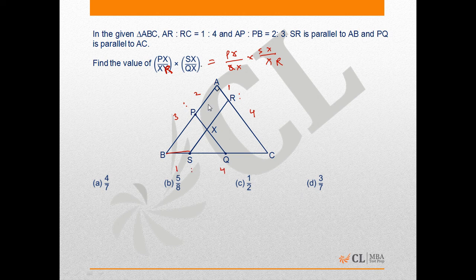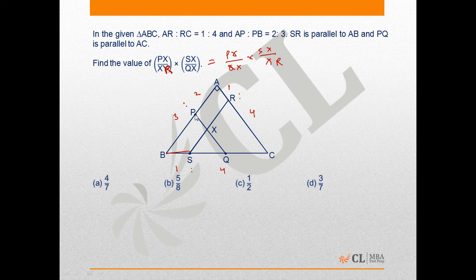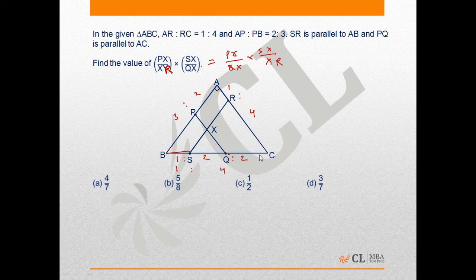Right, similarly PQ is parallel to AC so this ratio is 3 to 2. That means BQ to QC is also 3 to 2. So because this is 1, I can simply say that this ratio is 1 to 2. So it becomes 1 to 4 in this case and 3 to 2 in this case.